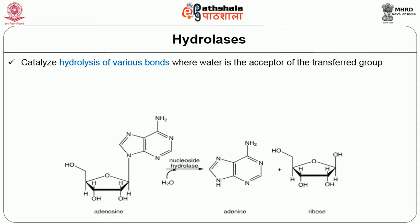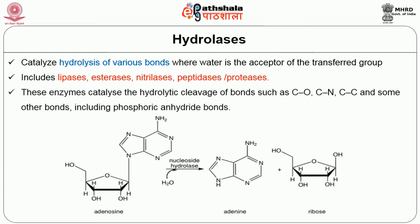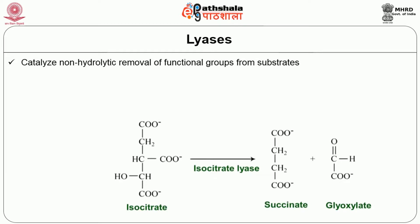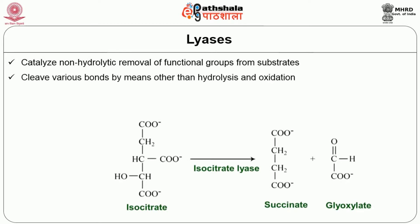The third group, hydrolases, catalyze the hydrolysis of various bonds where water is the acceptor of the transferred group. This class includes lipases, esterases, nitrilases, and peptidases or proteases. These enzymes catalyze the hydrolytic cleavage of bonds such as C-O, C-N, C-C, and other bonds including phosphoric anhydride bonds. An example shown is nucleotide hydrolysis, which brings about the degradation of adenosine into adenine and ribose.